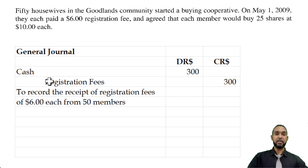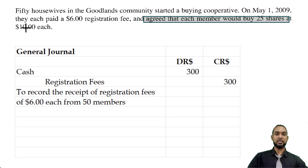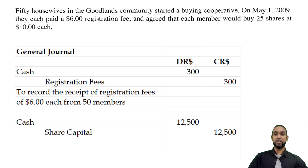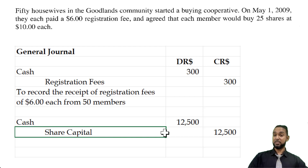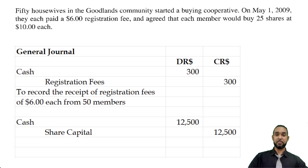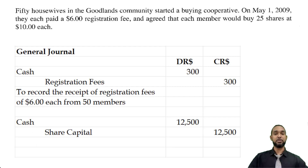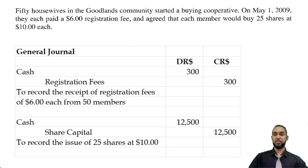The next thing they want us to record is the share purchase. 50 housewives agreed that each member would buy 25 shares at $10 each, so we're going to multiply 50 by 25 by 10, which gives us $12,500. The debit again is going to go to cash because money is coming in — cash is increasing, and to record an increase in an asset, you have to debit the asset account. Where is it coming from? It's coming from ordinary shares, or share capital. Share capital is a capital account; it's increasing, and to record an increase in capital, you have to credit. The debit entry came first, the credit entry came second and is indented relative to the debit entry. Please put your narrative: to record the issue of 25 shares at $10 each to each of 50 members. That's it for part A.